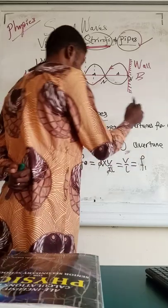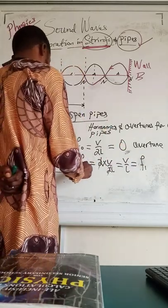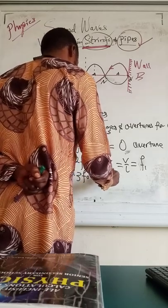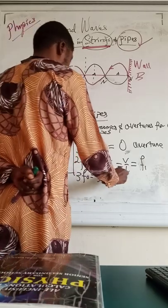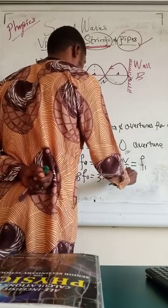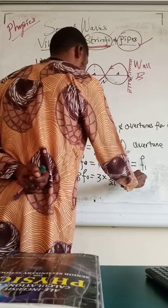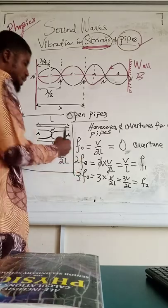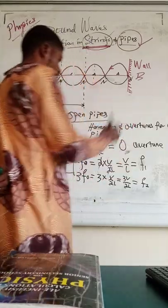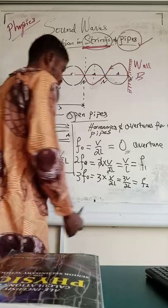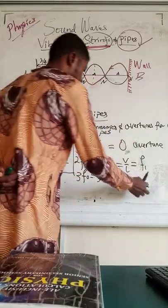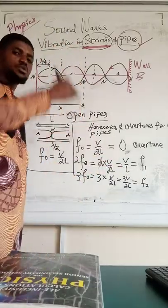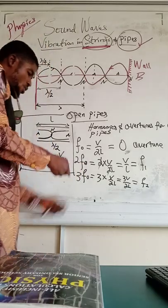The second harmonic equals two times V/2L, which simplifies to V/L — that is the first overtone. The third harmonic equals 3V/2L — that is the second overtone. The fourth harmonic equals 4V/2L — that is the third overtone. The pattern continues from there.